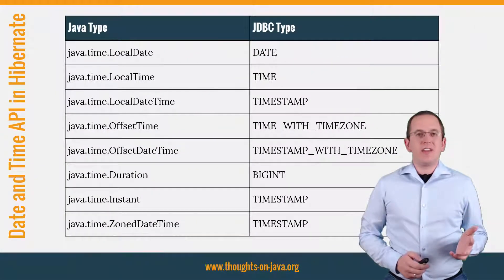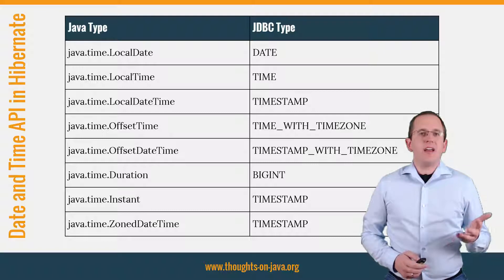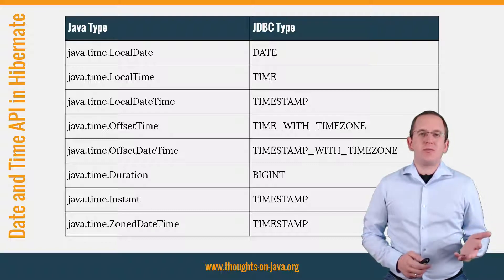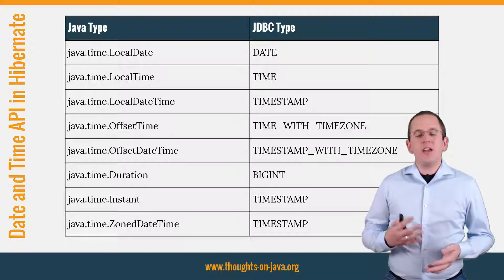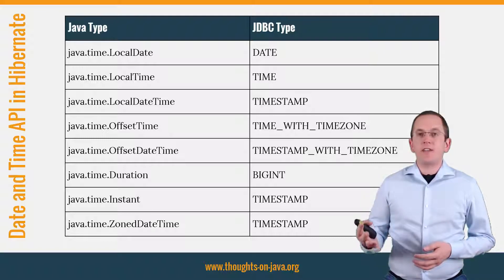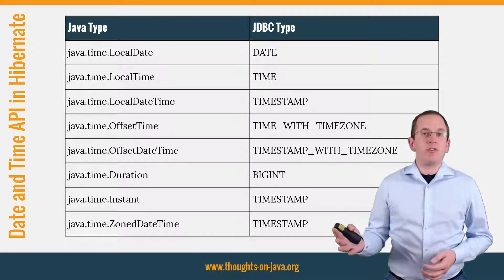Hibernate supports the classes of the Date and Time API since version 5 as basic types. And it not only supports the 5 mappings defined in the JPA 2.2 specification, it also maps Duration, Instant and ZonedDateTime objects. Here is a full list of the supported Java types and the JDBC types to which Hibernate maps them.